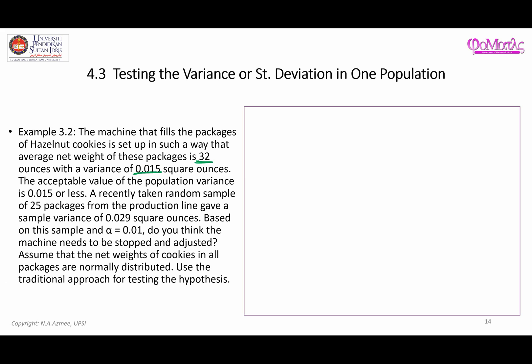The acceptable value of the population variance is 0.015 or less. This statement corresponds to the null hypothesis: σ² ≤ 0.015. A recently taken random sample of 25 packages gives a sample variance of 0.029, so n = 25 and s² = 0.029.